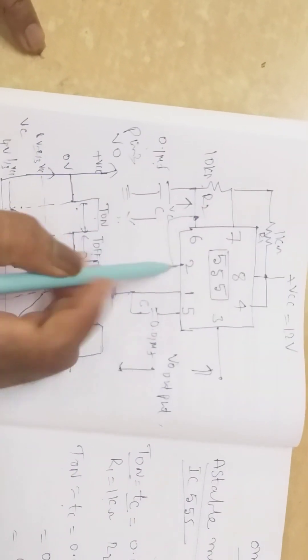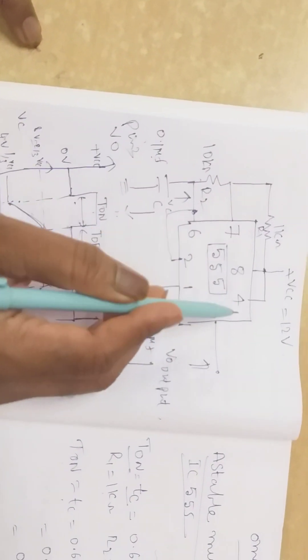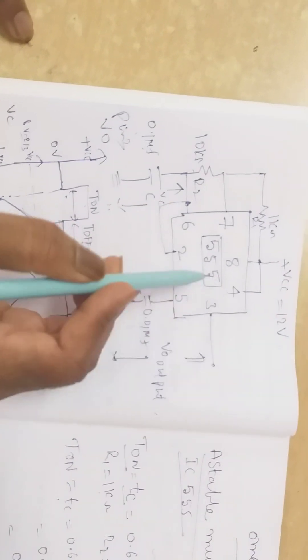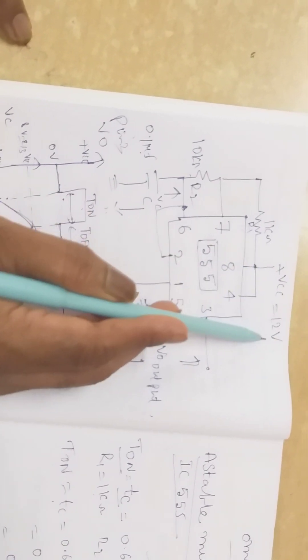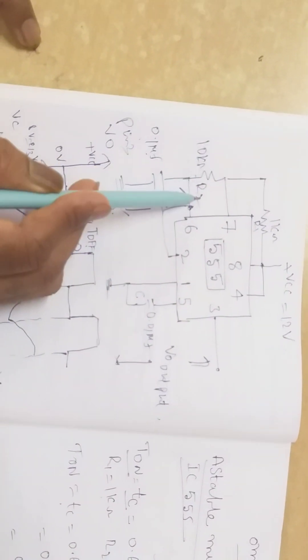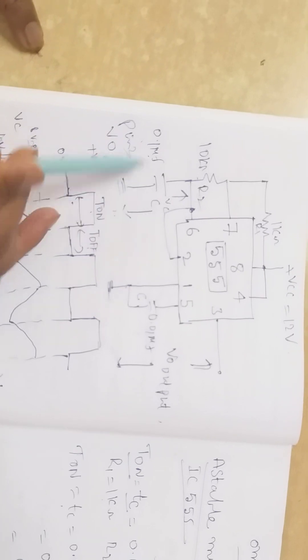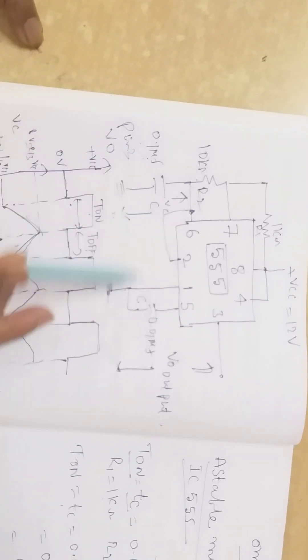Coming to the circuit: this is the waveform, and this is the circuit diagram. There are a total of 8 pins. The connections are as follows: Vcc equals 12 volts, R1 equals 1 kilo ohm, R2 equals 10 kilo ohms, and C equals 0.1 microfarad.